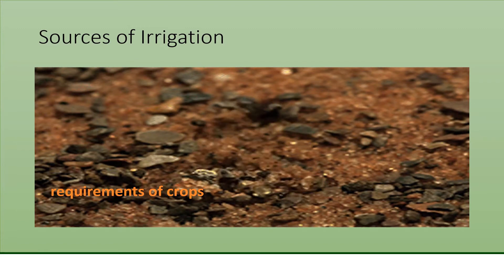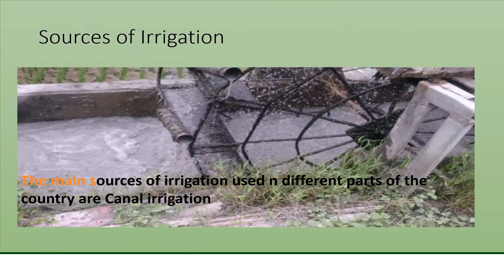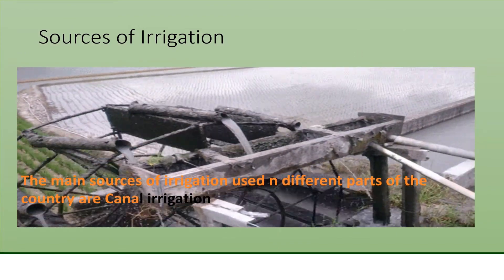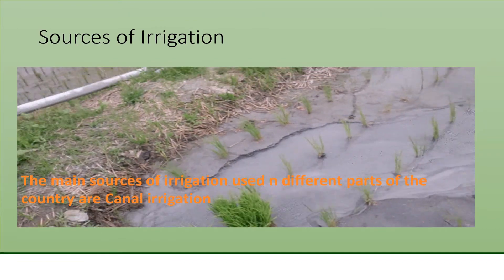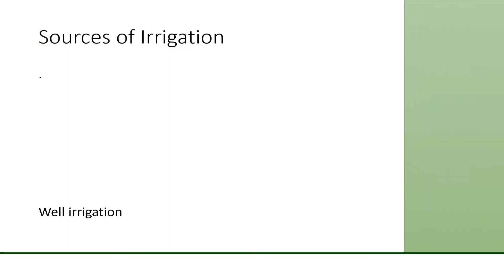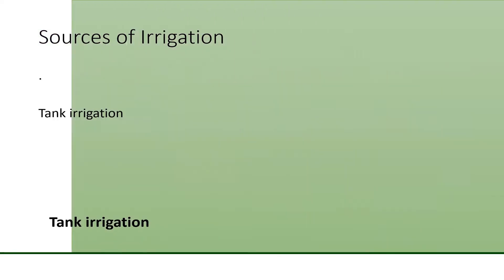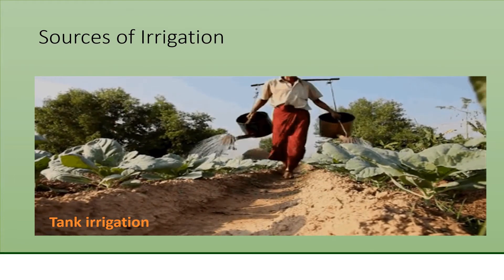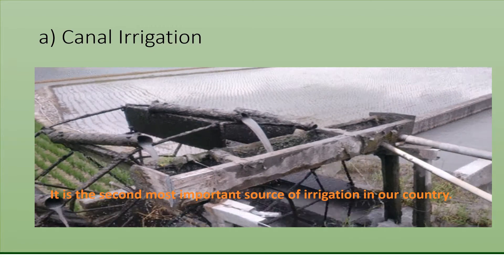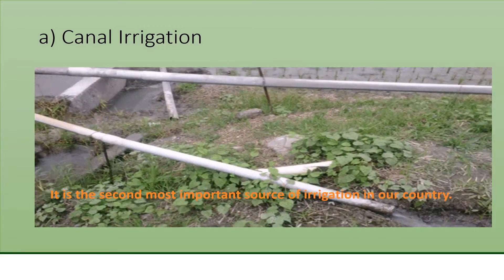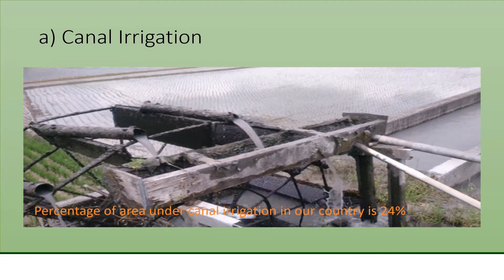The source of irrigation depends on the requirements of the crops. As far as irrigation is concerned, there are many sources. The second source of irrigation is well irrigation, and the third source is canal irrigation. The percentage area under canal irrigation in our country is 24%.